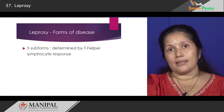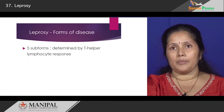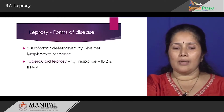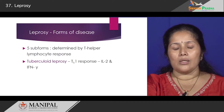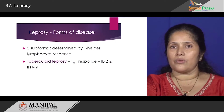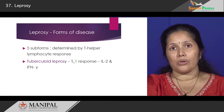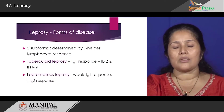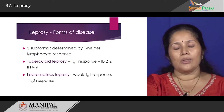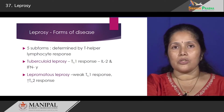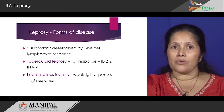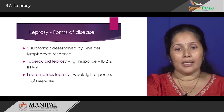What determines these subforms in leprosy? It is determined by the function of the T helper cells. In tuberculoid leprosy, there is a high response from T helper 1 cells, which produce a lot of interleukins as well as interferon gamma. It is almost the reverse in lepromatous leprosy, where there is a very weak T helper 1 cell response while the response from T helper 2 cells is markedly increased.